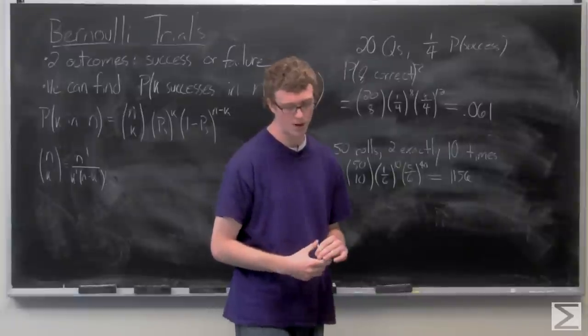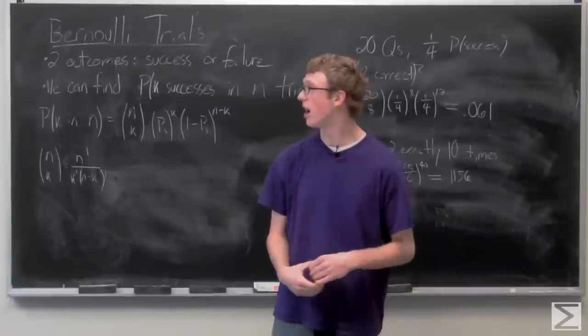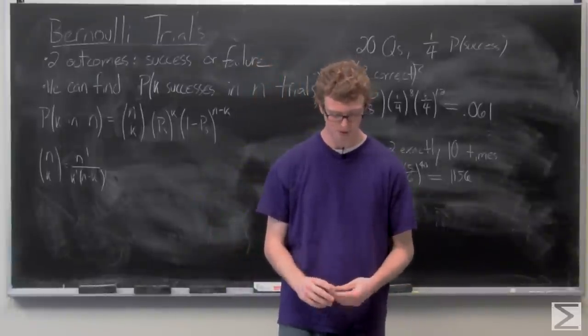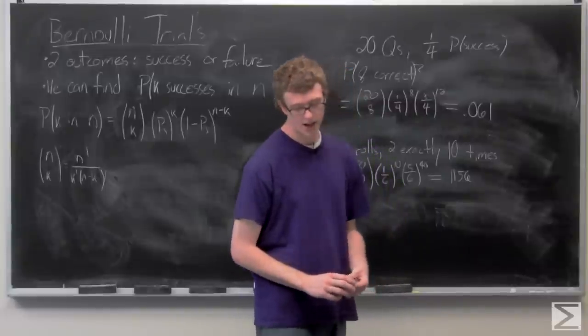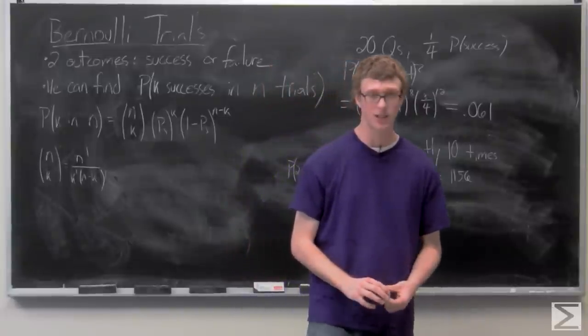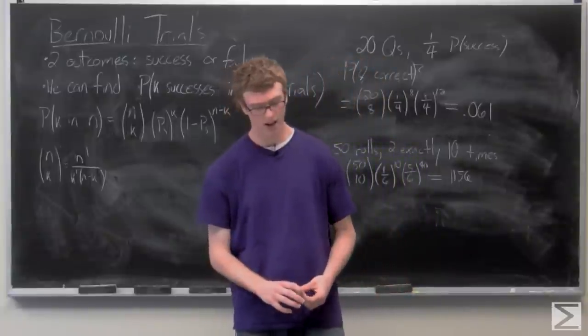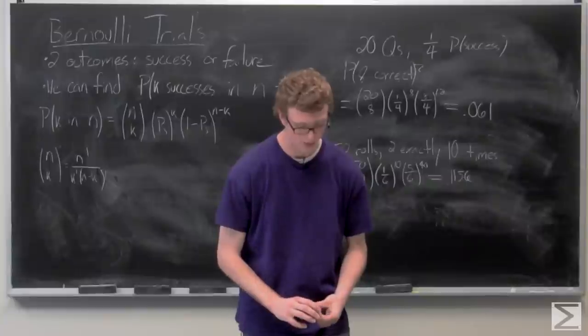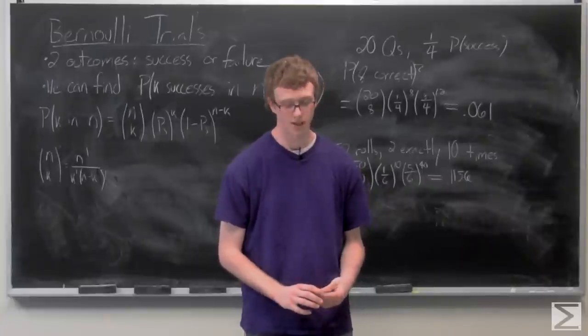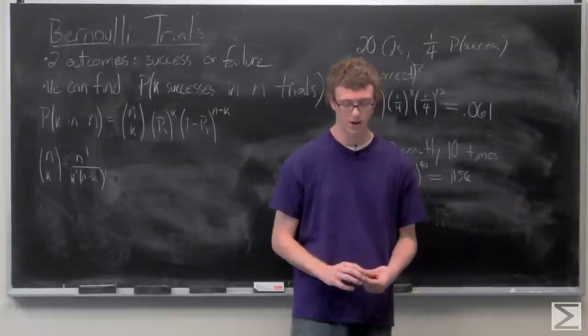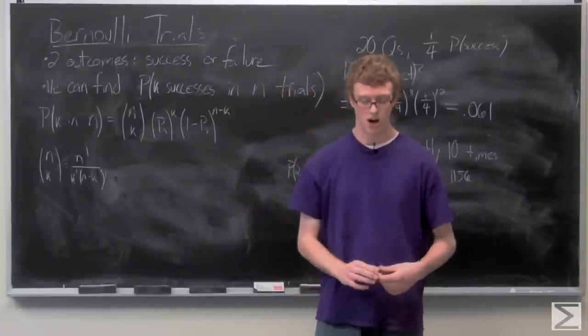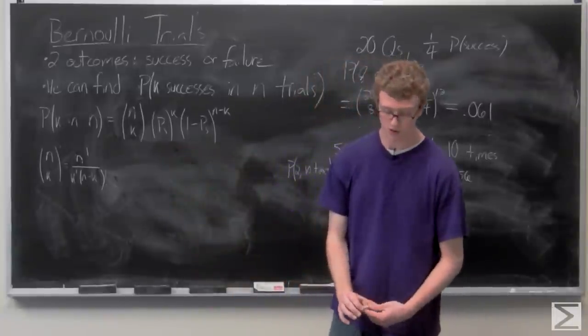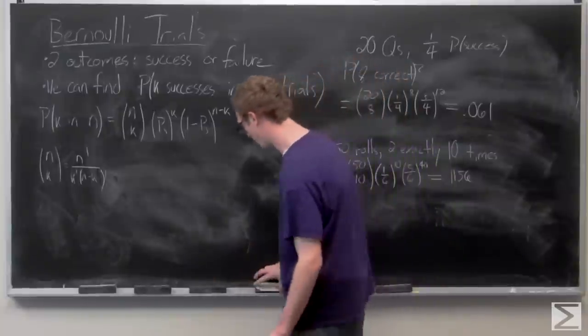So the last problem we're going to take a look at actually kind of combines binomial probability and the probability of at least one that we looked at in the last video. So we're given that Eggland's Best serves eggs in a dozen and a half, which is 18 eggs, and three percent of all of their eggs are cracked. And we want to find out the probability that at least three of the eggs that we buy in a carton of 18 are cracked. So we're going to need some tools from the at least one probability calculation. And we're going to need to use this binomial distribution.